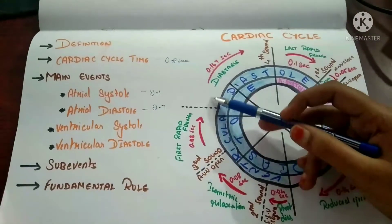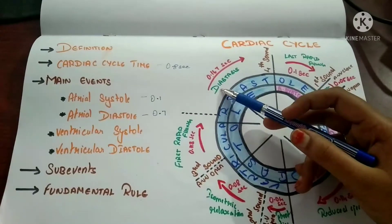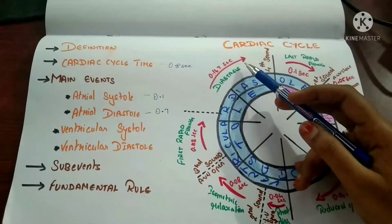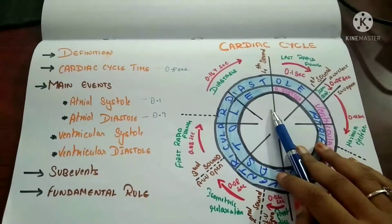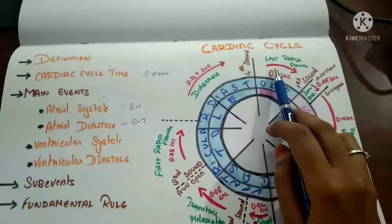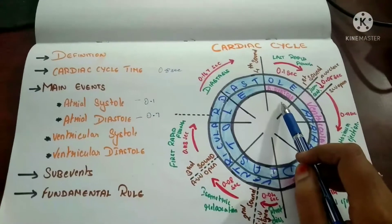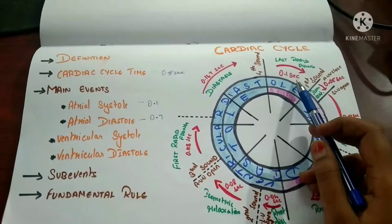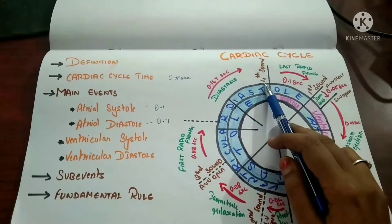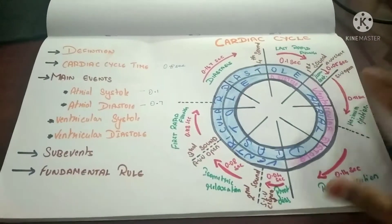After the first rapid filling, the flow of blood decreases — this is called the slow filling phase or diastasis, lasting 0.167 seconds, which is the longest period. After this, there is another rapid filling phase. This occurs because the atria begin contracting while the ventricles are still in the diastasis phase — the atrial contraction causes this last rapid filling phase in the ventricles, lasting 0.1 second. Due to the rapid speed of blood filling, the fourth heart sound is produced. This completes all the events, sub-events, and the timing of heart sounds.